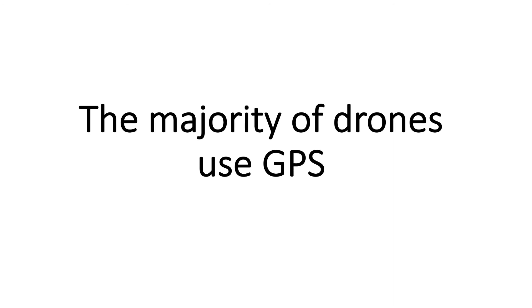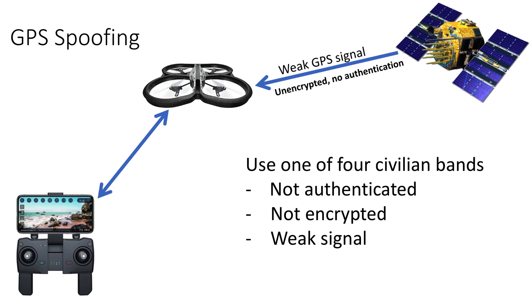Let's look at the next threat, which involves GPS. More and more drones are going to be GPS-enabled. Our first GPS attack is called spoofing. Here we have the setup: the controller on the bottom left, the drone, and the GPS satellite in the upper right-hand corner. For civilians, we get to use one of four civilian bands on multiple frequencies that enable us to identify our geolocation through triangulation — it takes more than one GPS satellite to give us a fairly accurate latitude and longitude location.